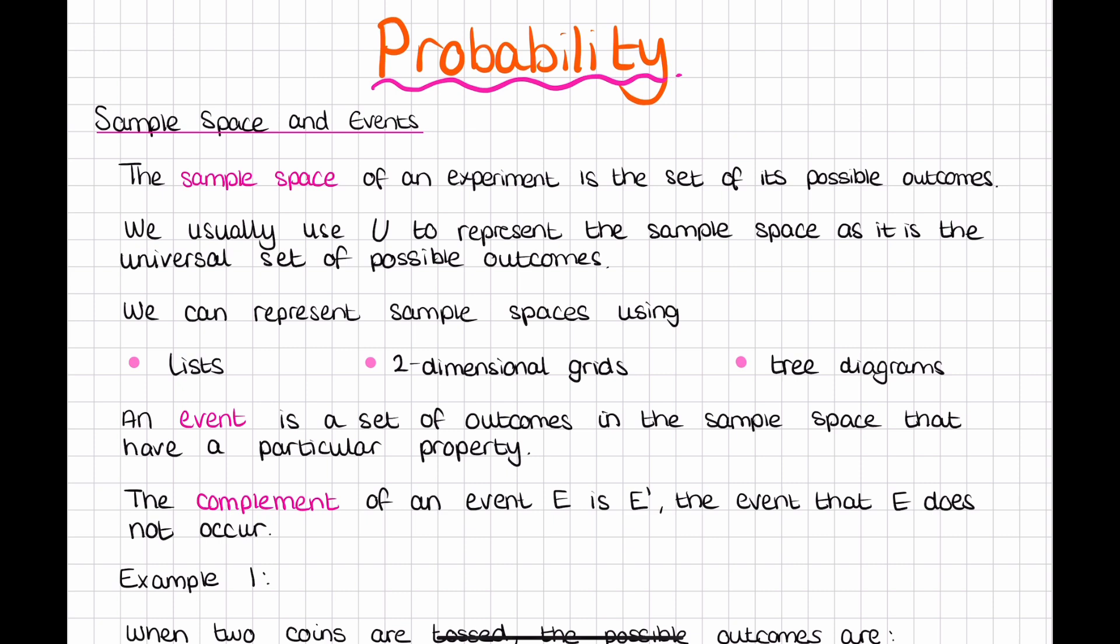An event is a set of outcomes in the sample space that have a particular property. The complement of an event E is E dash, which means that E does not occur.